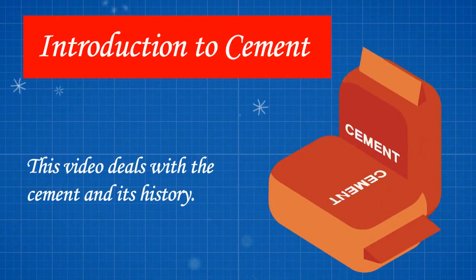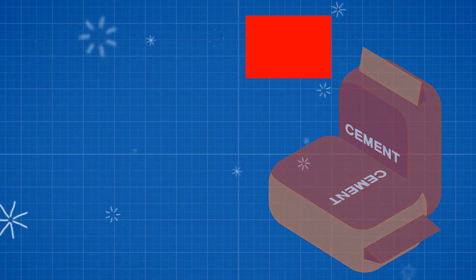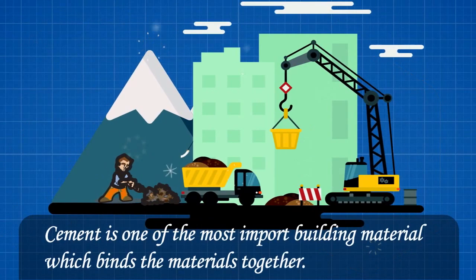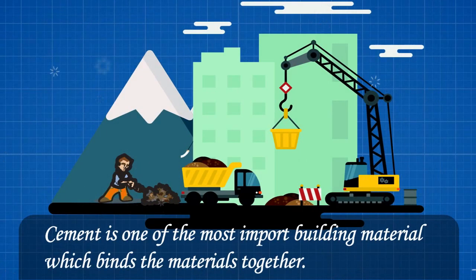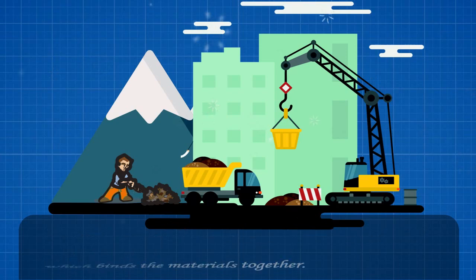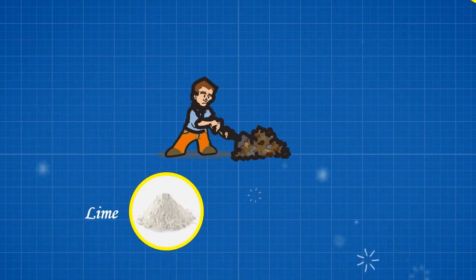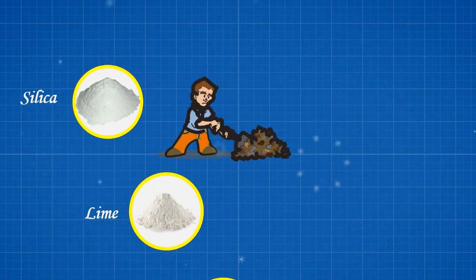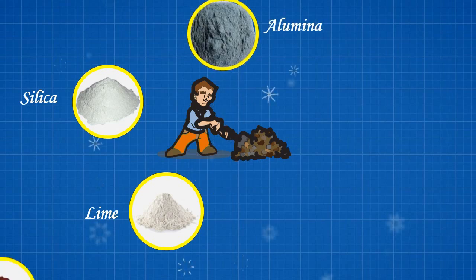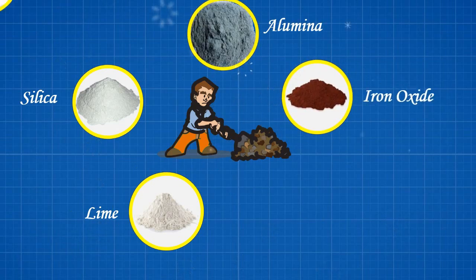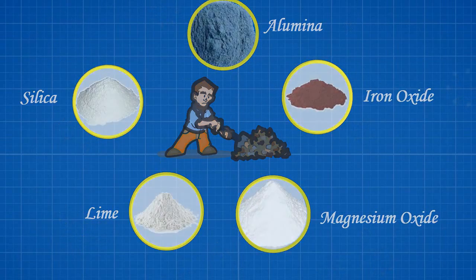This video deals with cement and its history. Cement is one of the most important building materials which binds materials together. Cement is the mixture of lime, silica, alumina, iron oxide, and magnesium oxide.